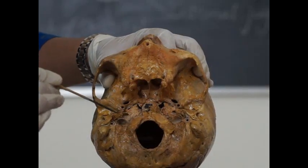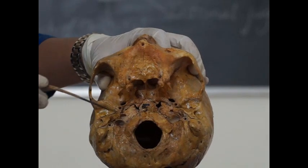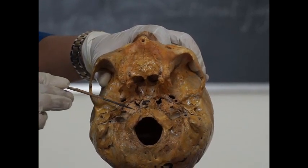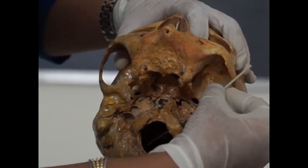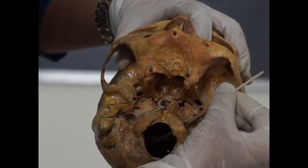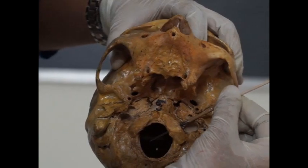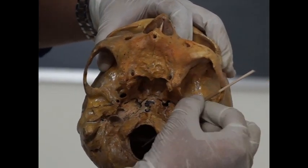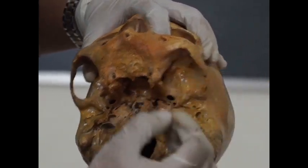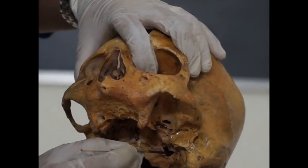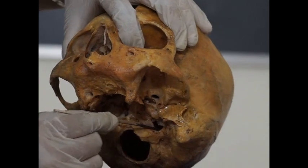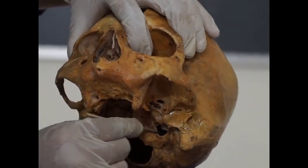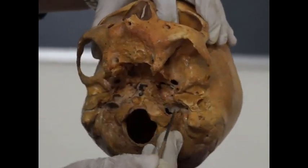The other foramens which are present on either side of foramen magnum are just below the condyle. Condyle is called as hypoglossal canal. If you put a probe, it goes into the anterior margin of foramen magnum. And just above to it, there is a very irregular shaped foramen which is called as jugular foramen.